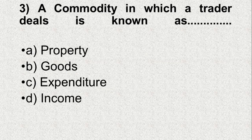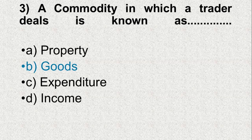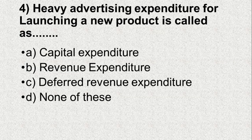Question number 3. A commodity in which a trader deals is known as — Option A: Property, B: Goods, C: Expenditure, D: Income. And the answer is B, Goods.